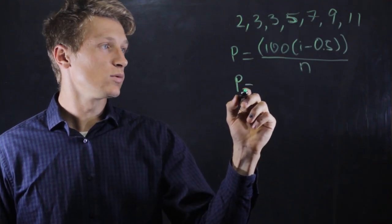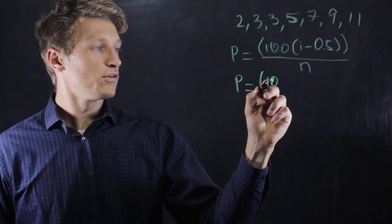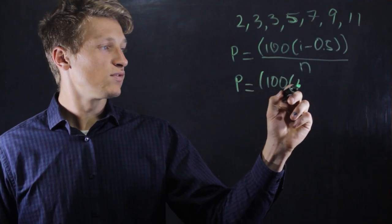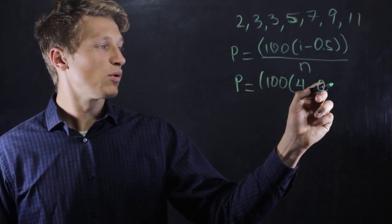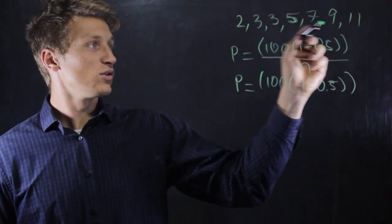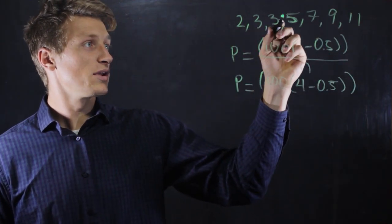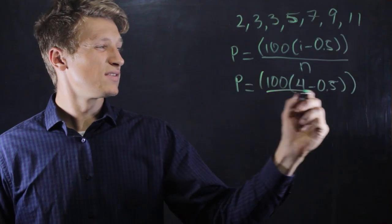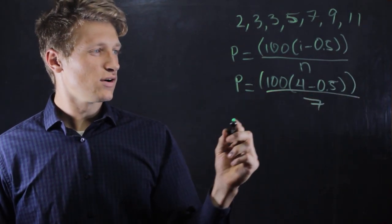So p equals 100 times 4 minus 0.5, and then we put n, which is the total number of numbers, 1, 2, 3, 4, 5, 6, 7, and then we solve that out.